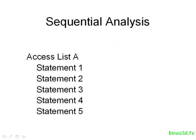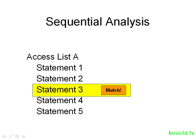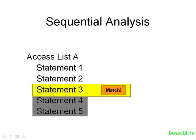When packets are compared to an Access List, it's done sequentially. We start by comparing a packet to Statement 1. If no match is found, we move on to Statement 2, then Statement 3. If a match is made, we're done comparing the packet to the Access List. We enact our permit or deny action, and the packet is not compared to the remaining statements. Our analysis is done — no more comparison.